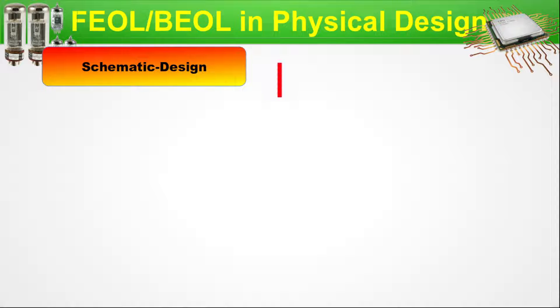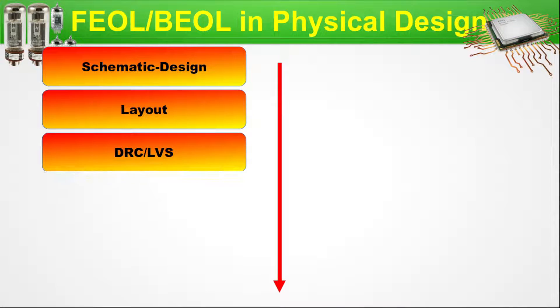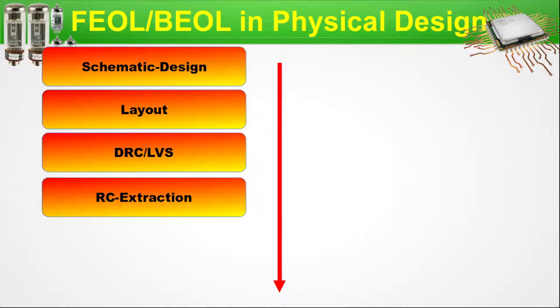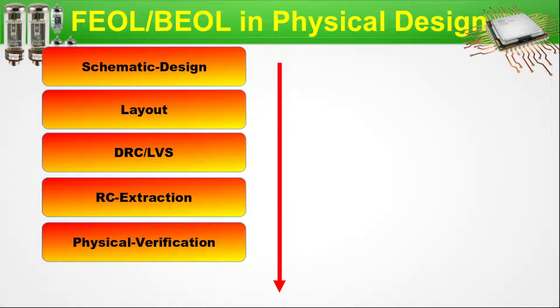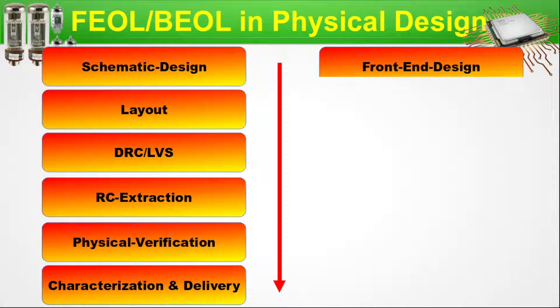Here goes the schematic design, and the flow goes in the direction of the arrow. Then is the layout, next is the DRC/LVS, then goes the RC extraction, then comes the physical verification, and finally the characterization and delivery. This is the back end part of the IP design — or analog design — wherever applicable.